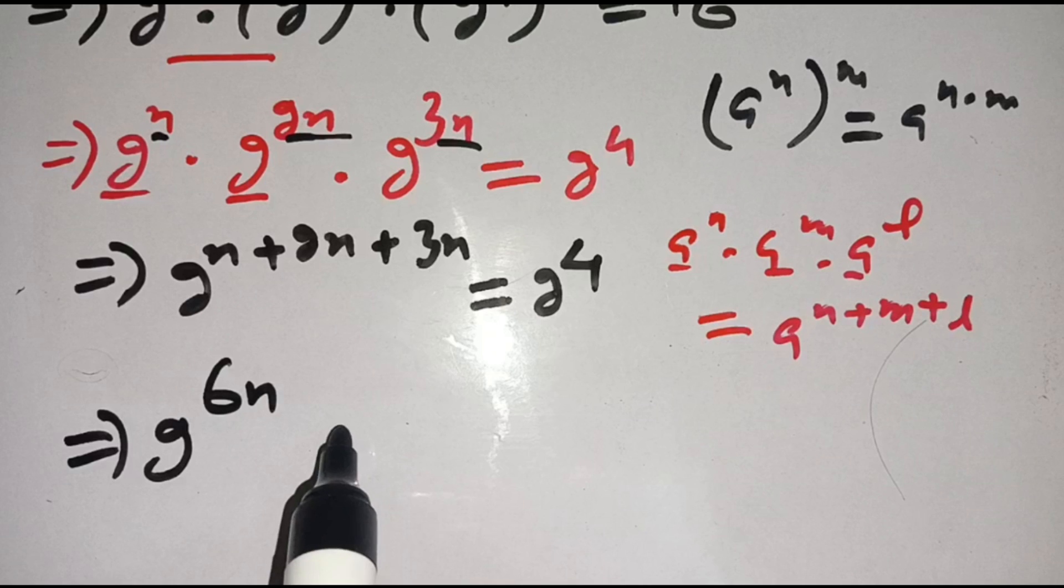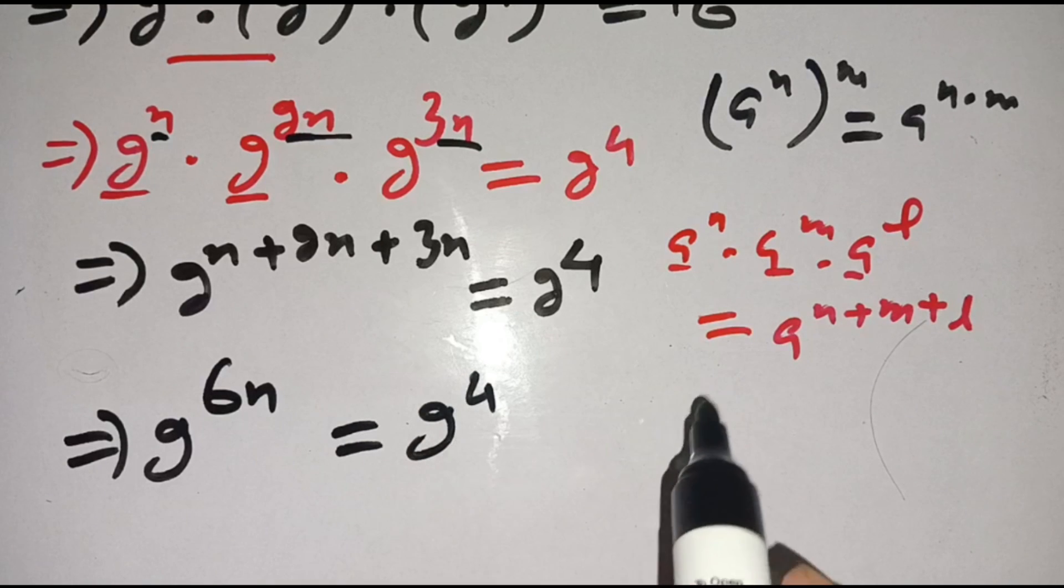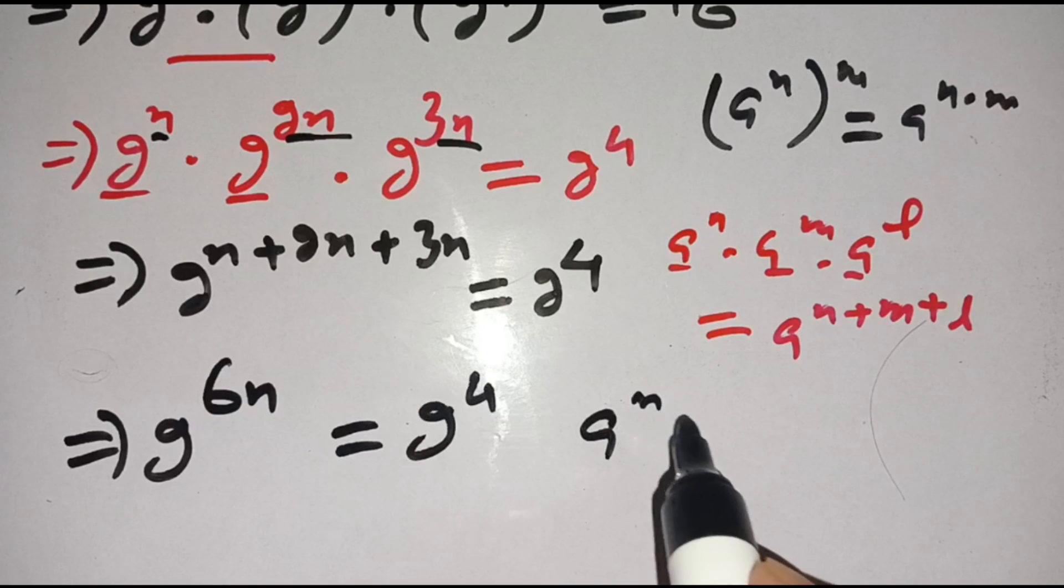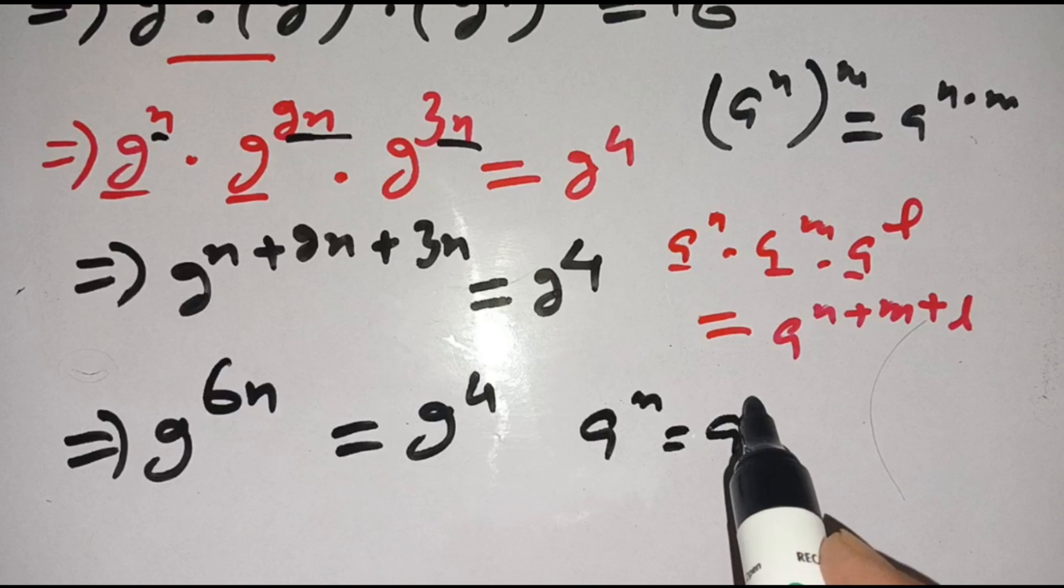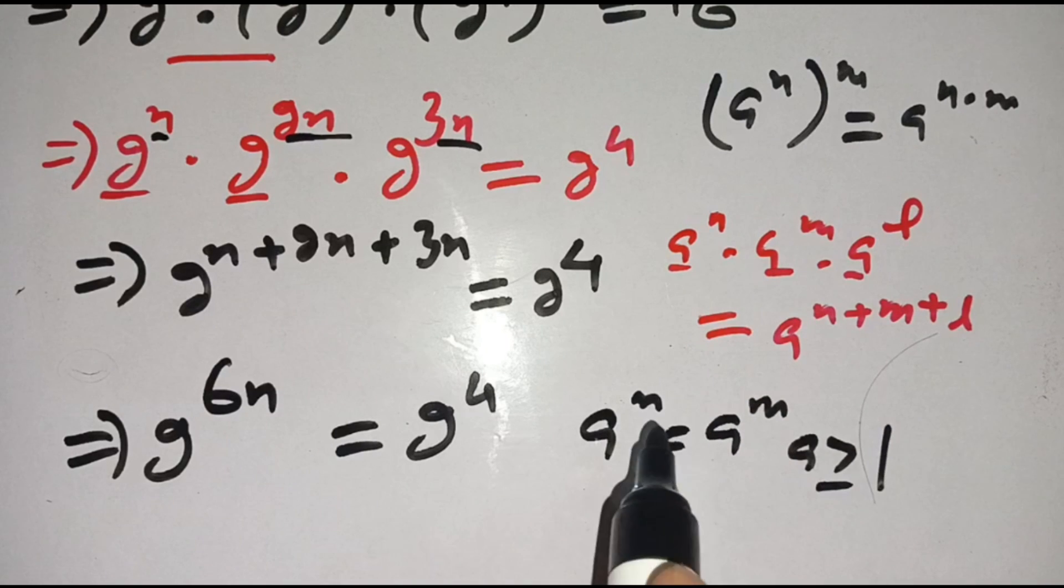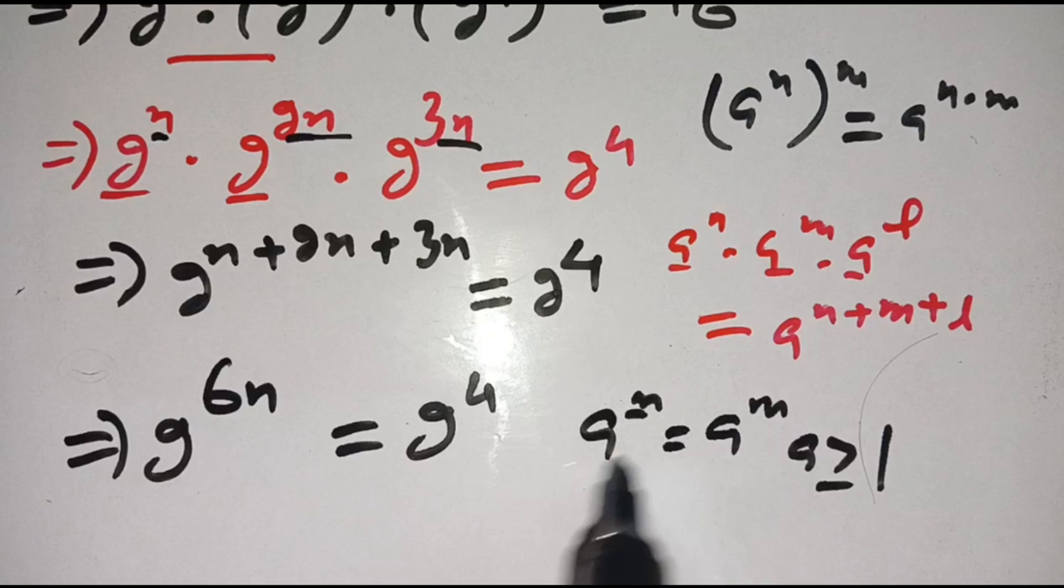And we know that if a^n is equal to a^m and a is greater than or equal to 1, then we can compare its power, means that n is equal to m.